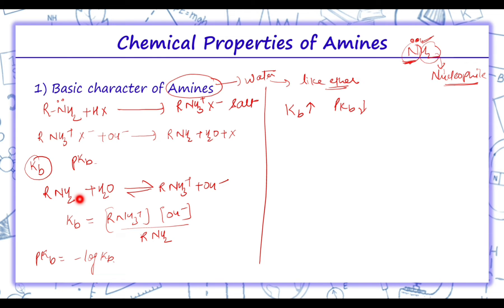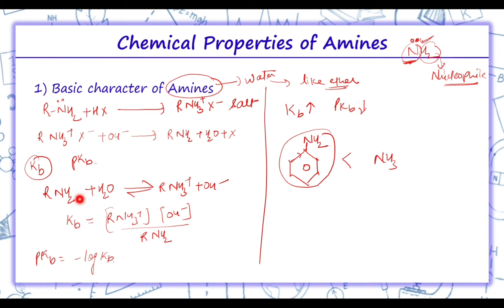Aromatic amines are weaker bases than ammonia. For example, C6H5NH2 is weaker than ammonia because the electron-withdrawing nature of the aryl group makes it less basic than ammonia.